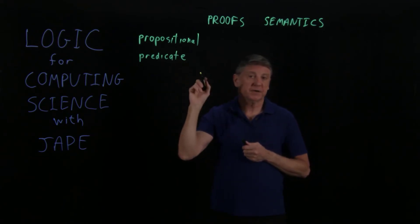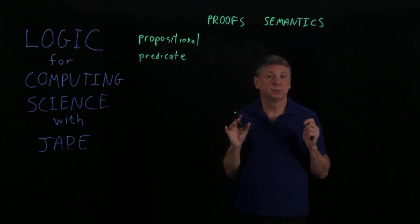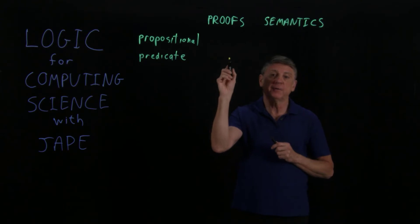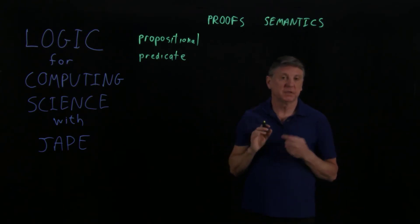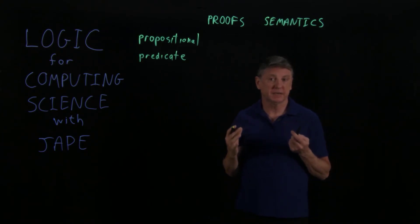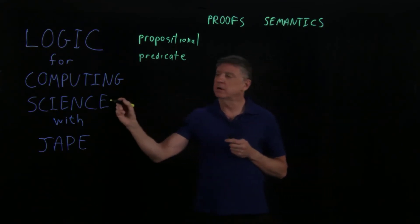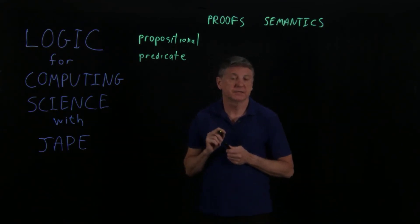Likewise, when we get to predicate logic, we'll go through the proofs. And suddenly, part of this will break down. That is, for every proof, there will be something that we'll call a semantic entailment. But the other way won't be true. There are things that are called undecidable. And those undecidable things, that's where the science part of this comes in.